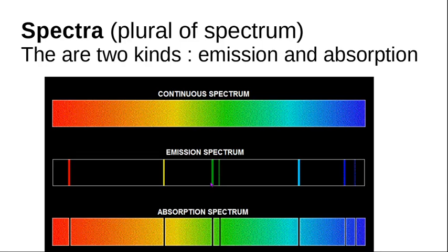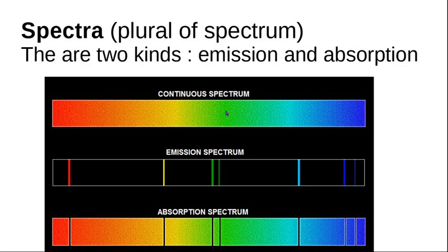We want to talk about spectrums, or spectra, which is actually the plural, in the context of the photoelectric effect. We look at two different kinds: an emission spectrum and an absorption spectrum. You should have seen a rainbow — that's when white light is split into all different colors, and this is called a continuous spectrum, all the way from red, orange, yellow, green, blue.